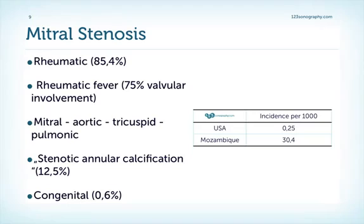Which valves are usually involved? It's almost always the mitral valve, followed by the aortic valve, the tricuspid valve, and very rarely the pulmonic valve. What other forms of mitral stenosis do we see aside from rheumatic heart disease? Stenotic annular calcification, especially in the older population, accounts for approximately 12.5 percent. However, very rarely does stenotic annular calcification lead to severe mitral stenosis. There are also rare congenital forms such as the parachute mitral valve or the double orifice mitral valve.